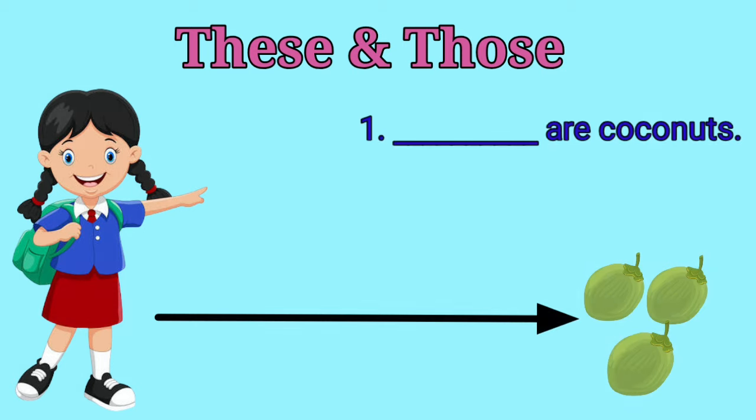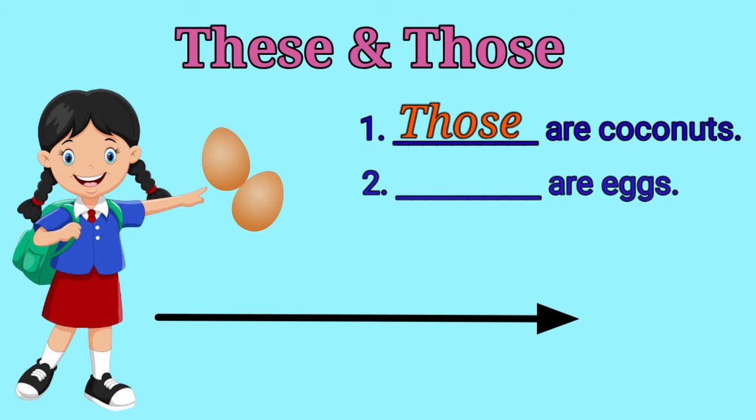Number 1, dash are coconuts. Children, are the coconuts near or far away? Yes, it's far away, so what shall we use? That's right, those are coconuts.